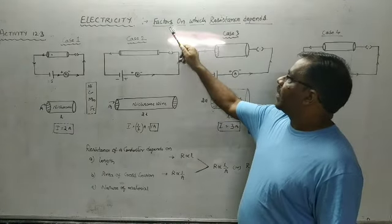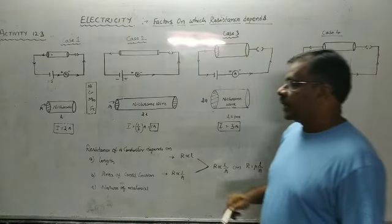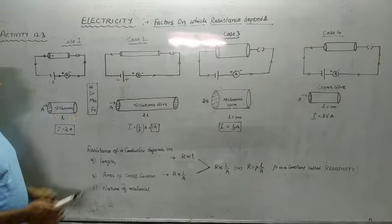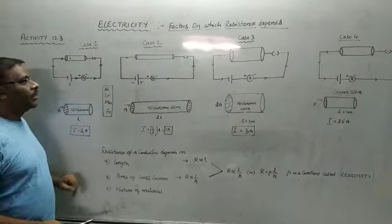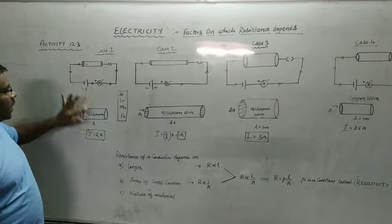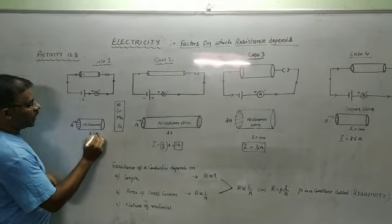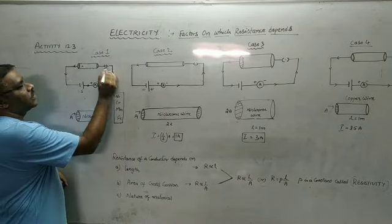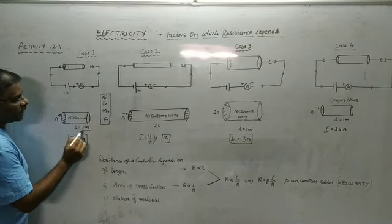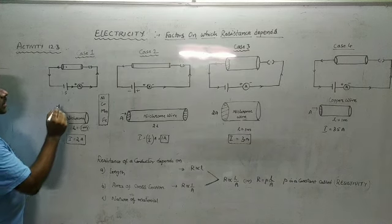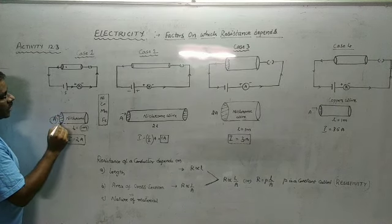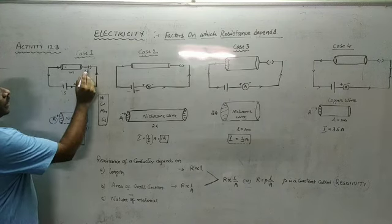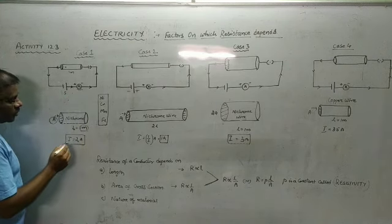Next we will learn about the factors on which resistance depends, as shown in activity 12.3. In activity 1 we take a nichrome wire of length 1 meter, connected to a battery and an ammeter. The nichrome wire has a length of 1 meter and a certain area of cross-section. When we switch on the key, the ammeter shows a certain reading — let the reading be 2 amperes.